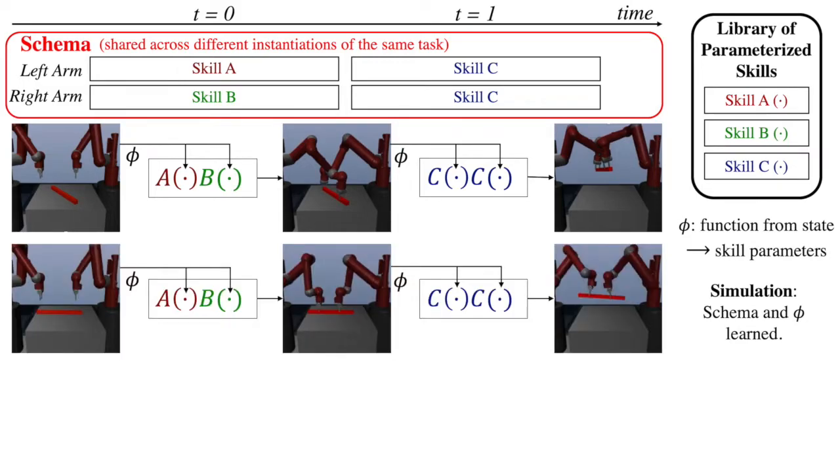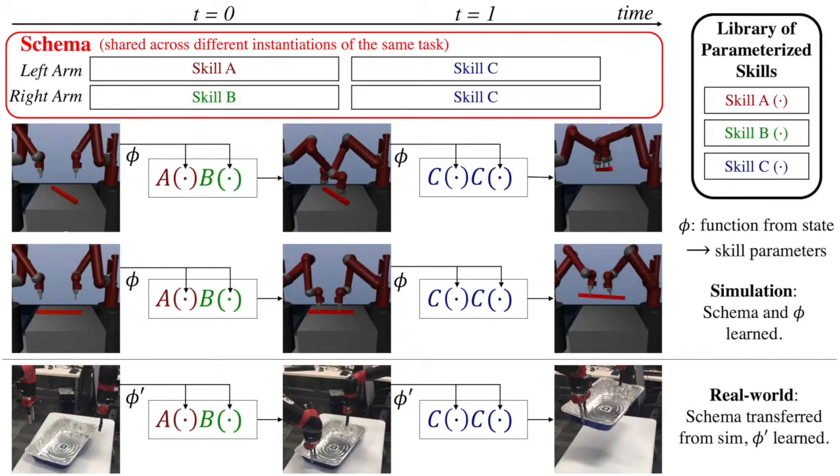Note that the same schema would be applicable across different instantiations of the same task. This modularity allows us to transfer schemas to solve related tasks, and simply relearn the parametrizations with which the skills are invoked. This enables us to learn to solve sparse reward tasks on real-world robotic systems from raw camera images very efficiently.